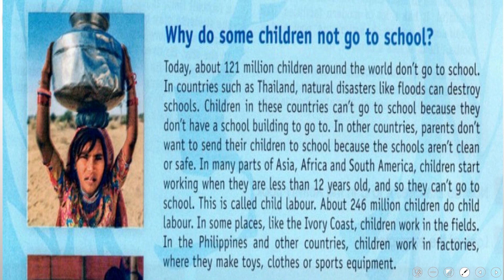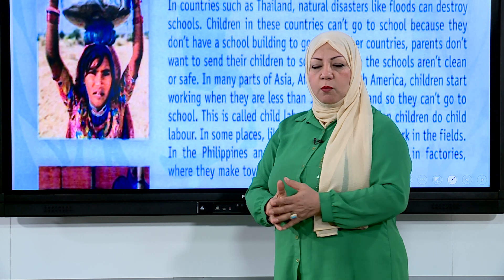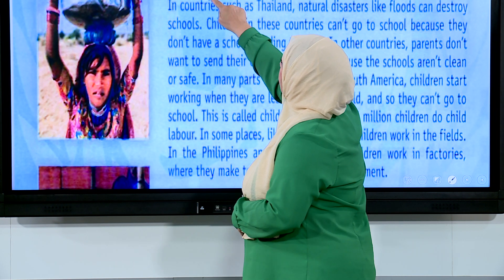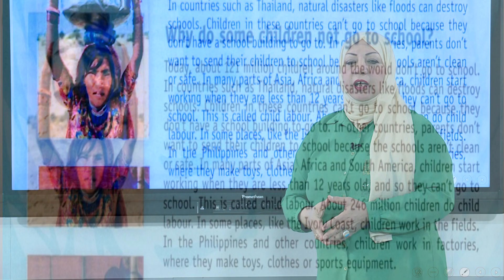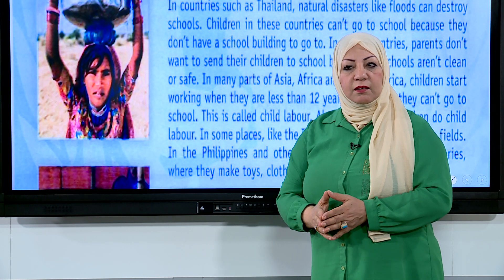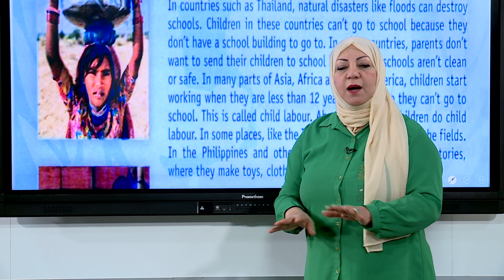Why do some children not go to school? Today, about 121 million children around the world don't go to school. In countries such as Thailand, natural disasters like floods can destroy schools. Children in these countries can't go to school because they don't have a school building to go to.